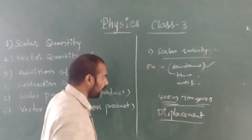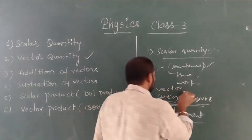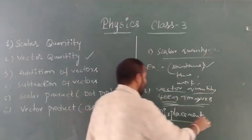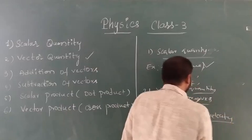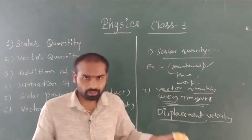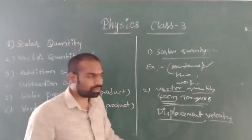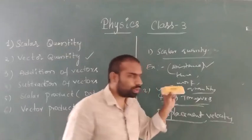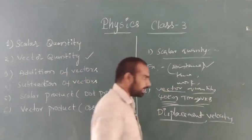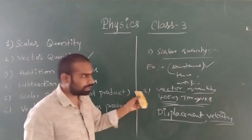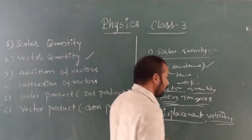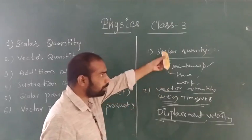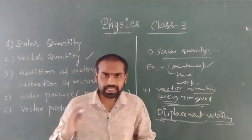Vector quantity has both magnitude and direction. Examples of vector quantities are displacement, velocity, and electric field. For example, velocity is displacement by time — velocity is also a vector quantity because it has direction, like from Tandu to Vikarabha. Examples of scalar quantities are distance, time, and work. Now scalar quantity and vector quantity should be clear.